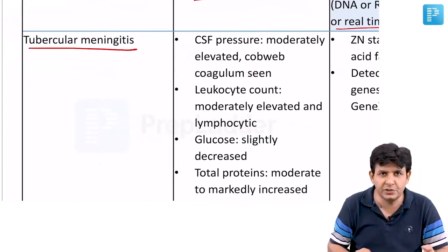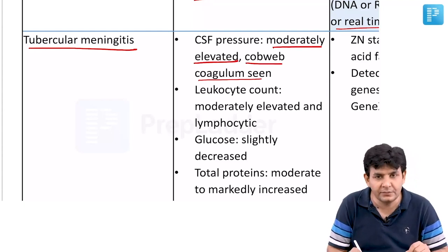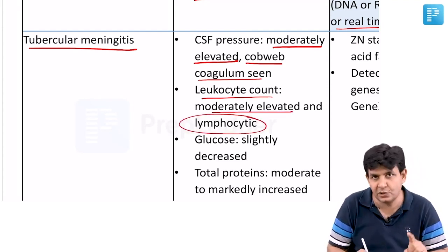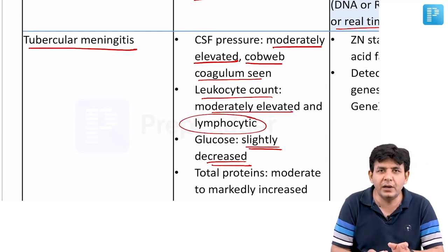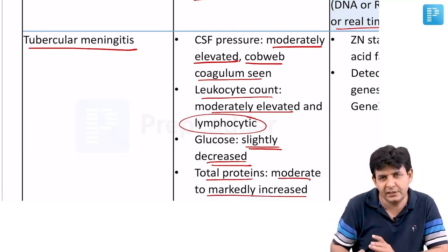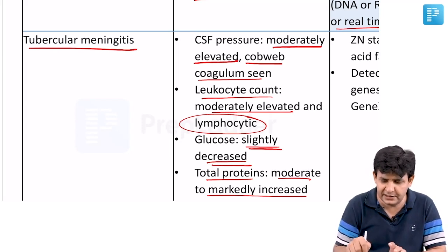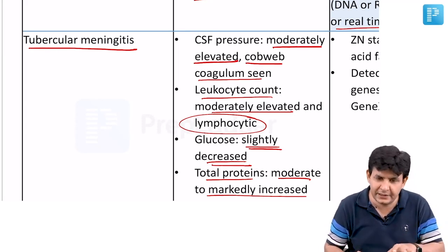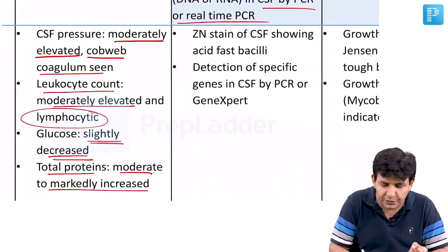Tubercular meningitis differs slightly from pyogenic. CSF pressure is moderately elevated, and a cobweb coagulum is observed - a special feature. Leukocyte count is elevated and predominantly lymphocytic. Glucose is slightly decreased, not as severely as in pyogenic meningitis, and total proteins are moderate to markedly increased.